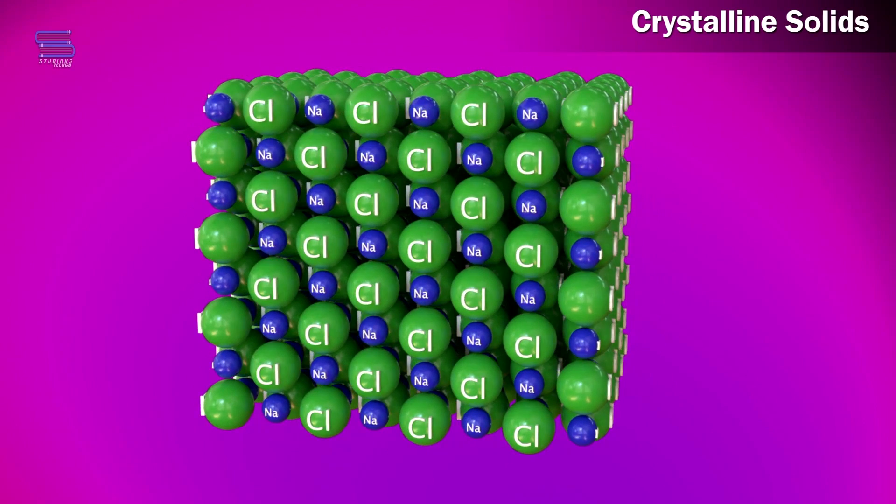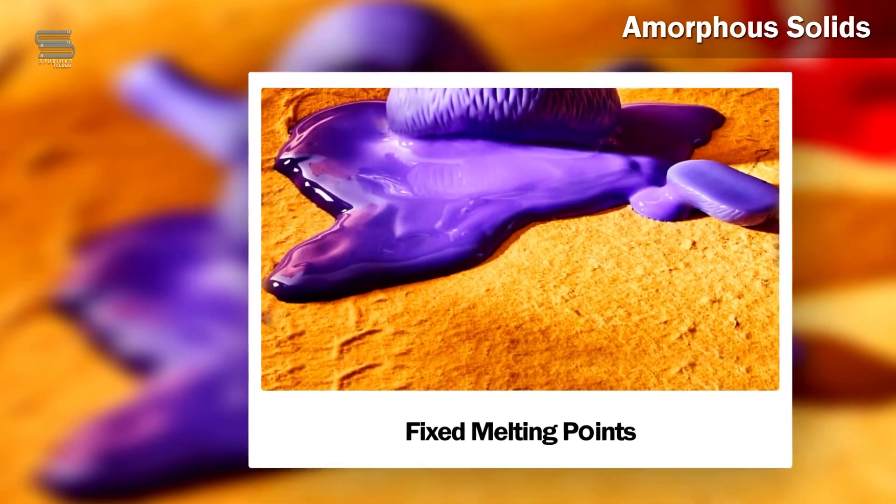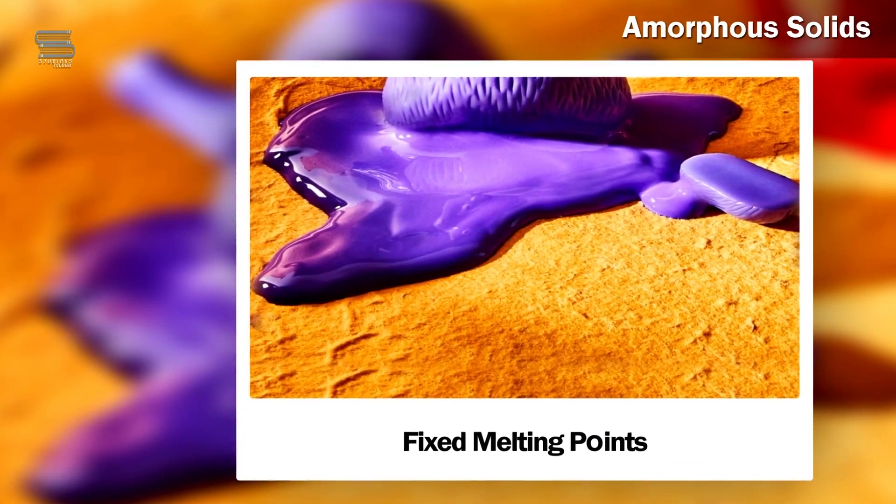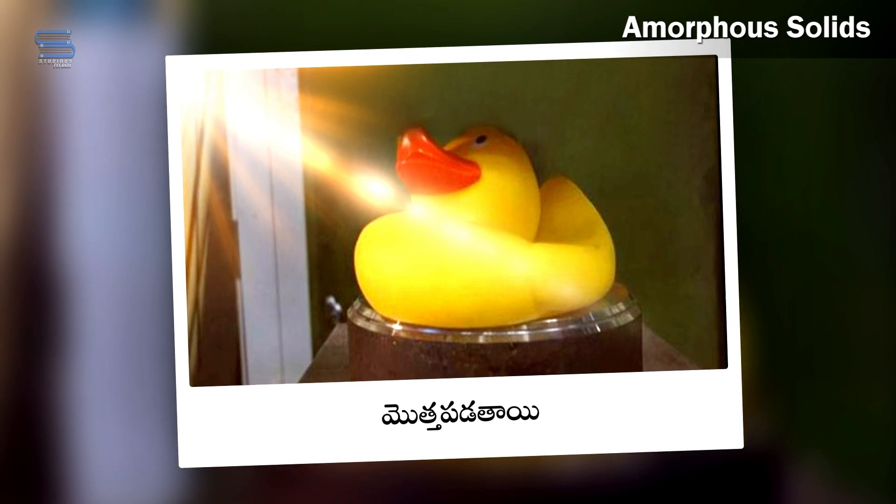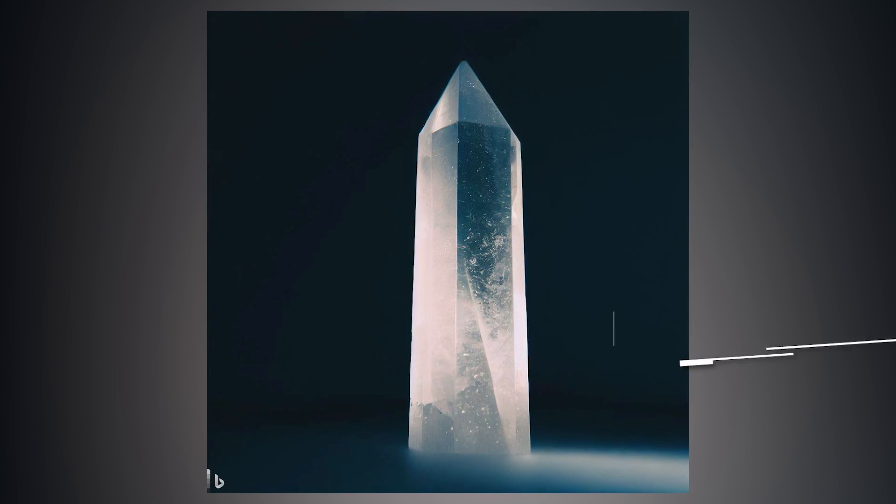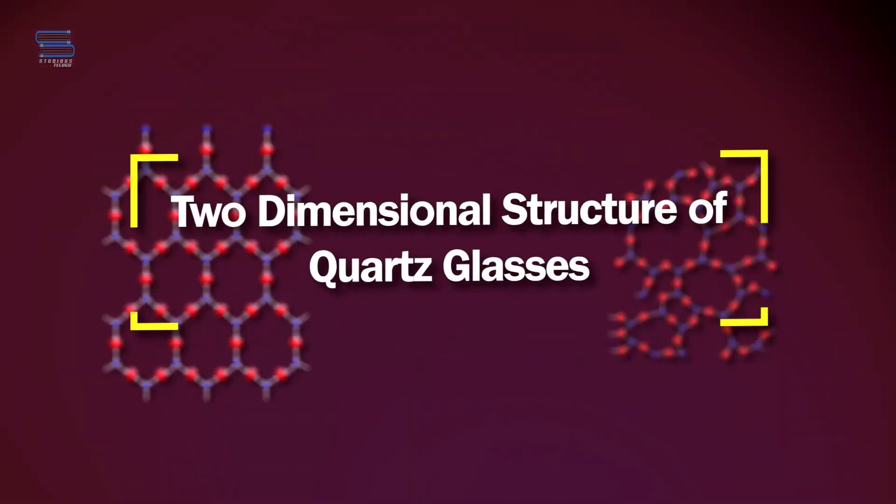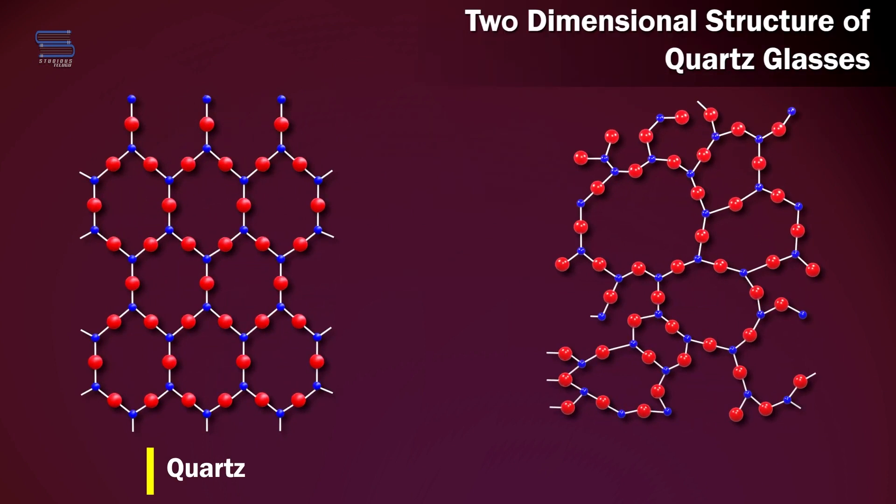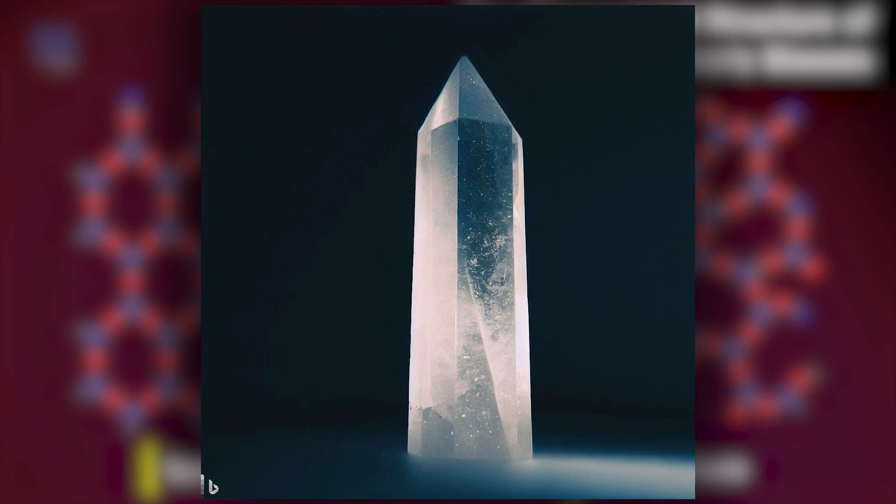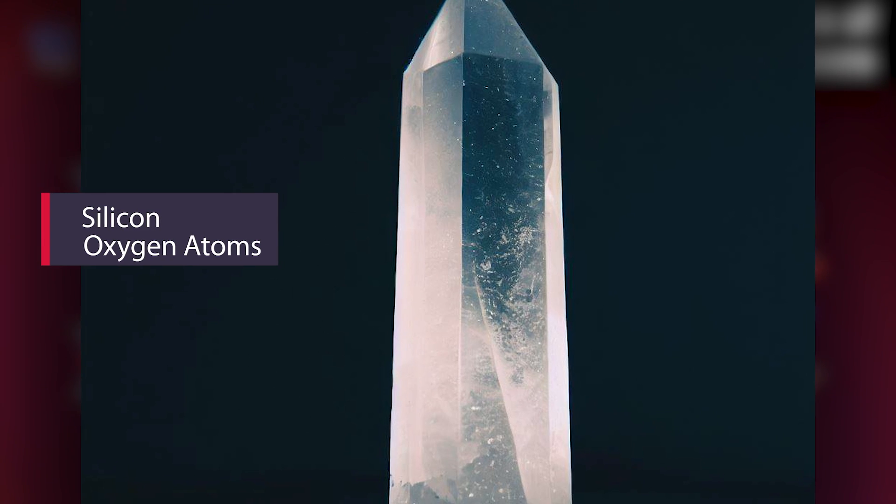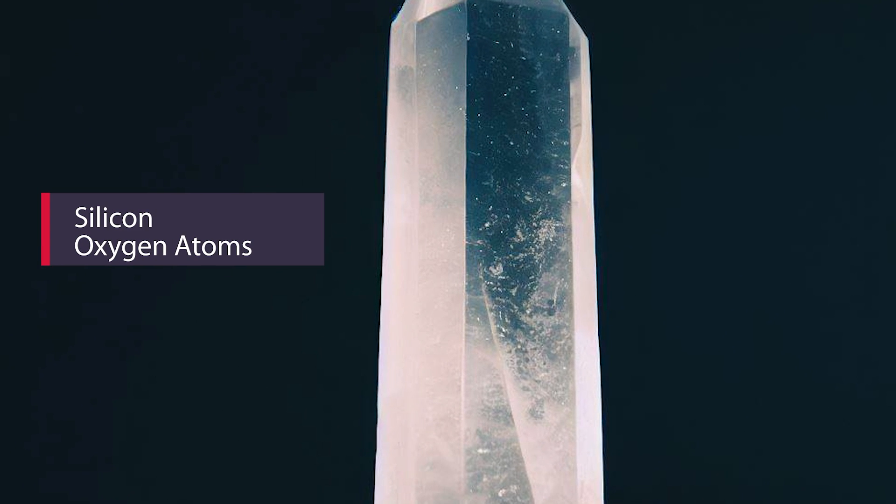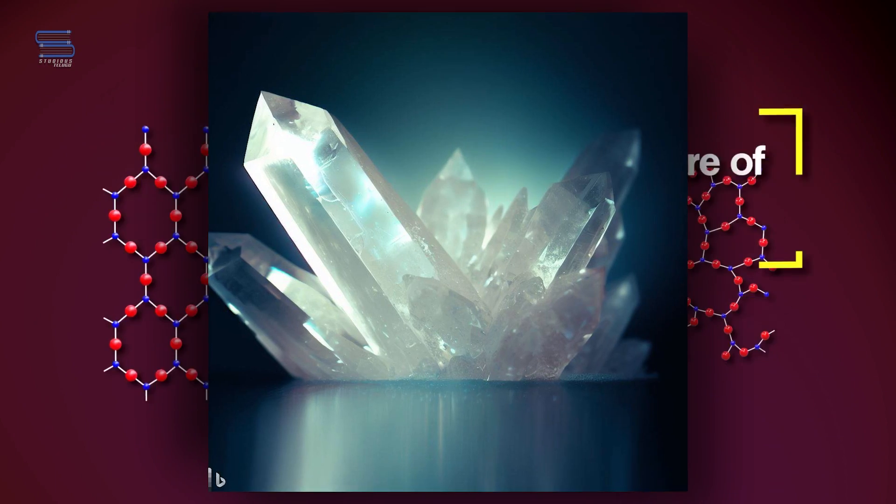Let's zoom in on quartz glass, a fascinating form of amorphous solid. Despite its lack of a defined crystalline structure, it still possesses unique properties. Quartz glass is made primarily of silicon and oxygen atoms arranged in a three-dimensional network. This arrangement gives quartz glass its exceptional transparency and resistance to high temperatures.